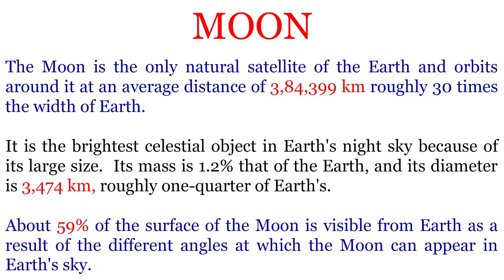The Moon is the only natural satellite of the Earth and orbits around it at an average distance of 384,399 km, roughly 30 times the width of Earth. It is the brightest celestial object in Earth's night sky because of its large size.